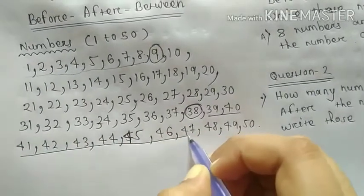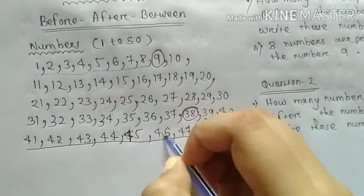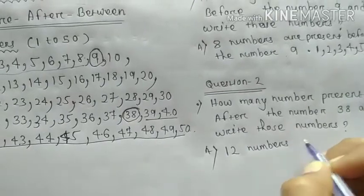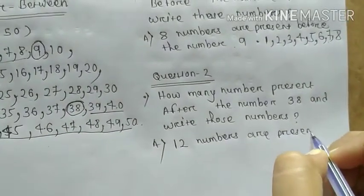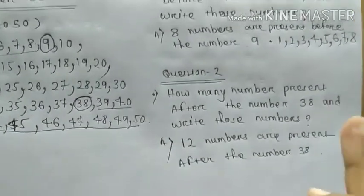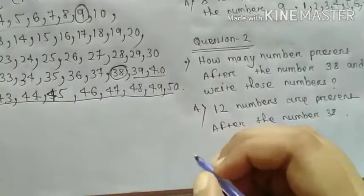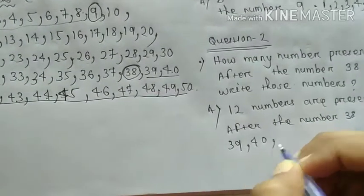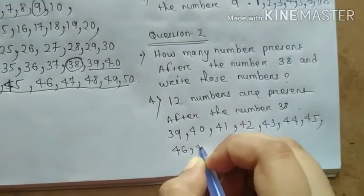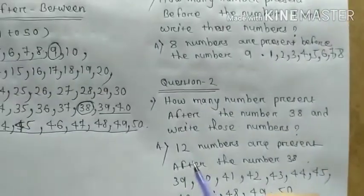After 38, and which numbers are after 38? So the answer is how many numbers? 1, 2, 3, 4, 5, 6, 7, 8, 9, 10, 11, 12. So the answer is 12 numbers are present after the number 38. Write those numbers: 39, 40, 41, 42, 43, 44, 45, 46, 47, 48, 49, 50.